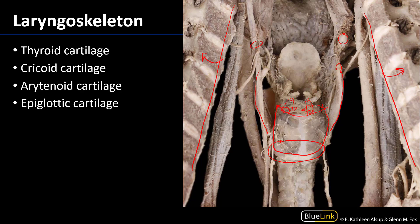Sitting atop the arytenoid cartilages are the corniculate cartilages, although you're not responsible for seeing these in the laboratory. The cuneiform cartilages would rest in the folds lateral to that.